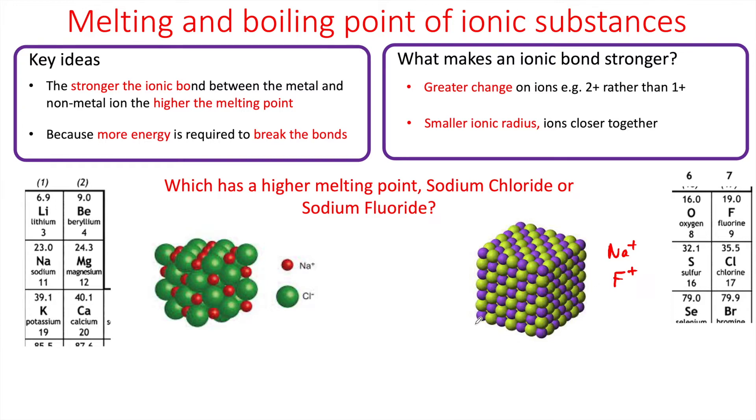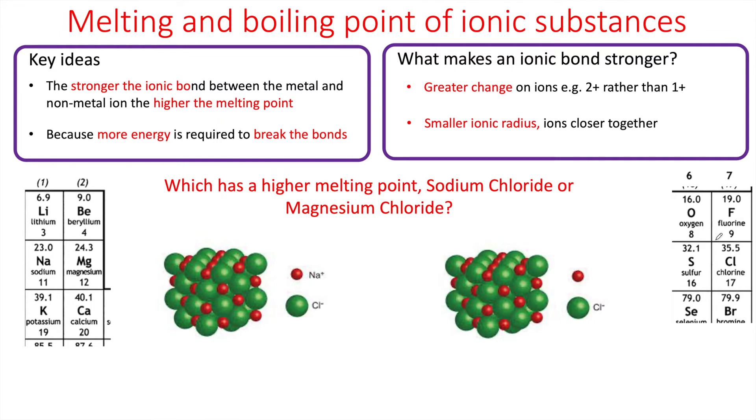In an exam question you'll just say the fluorine ion is smaller than the chlorine ion, therefore the distance between the sodium and fluorine ion is less. Therefore the ionic bond is stronger and more energy is then needed to break the bond, so its melting point is higher.